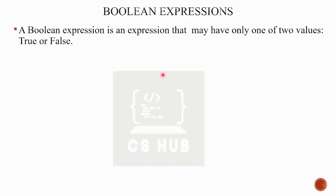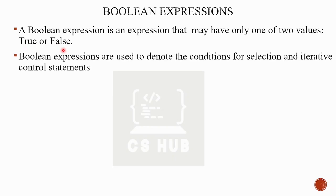A boolean expression is an expression that may have only one of two values: true or false. Python is case sensitive — that is, True with capital T and False with capital F, and other letters are small. That is the main idea of a boolean expression.